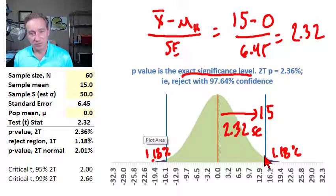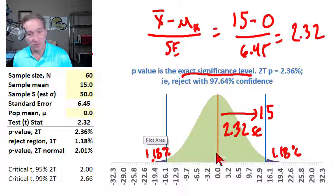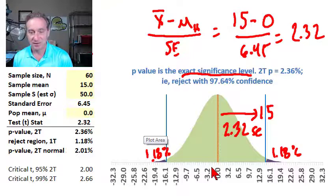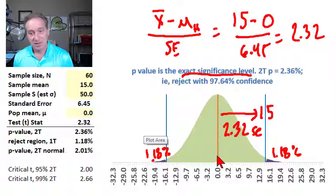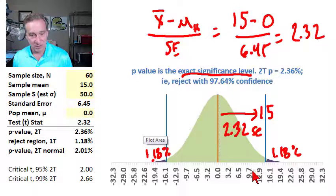this observed 15, which is 2.32 standard errors away from our hypothesized null, that's far enough away that at 95% confidence, we would reject the null hypothesis that the true population mean is zero.